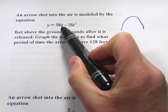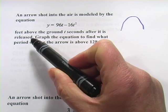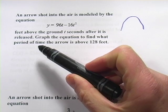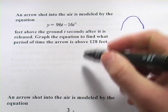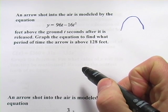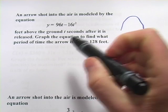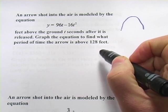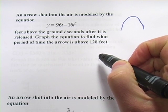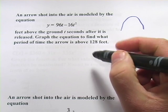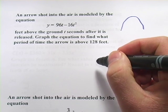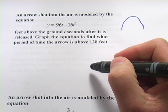So y equals 96t minus 16t squared feet above the ground t seconds after it is released. So y is the feet, the distance it is above the ground, t is the seconds. Graph the equation to find what period of time the arrow is above 128 feet. So we're going to make a little sketch of this.